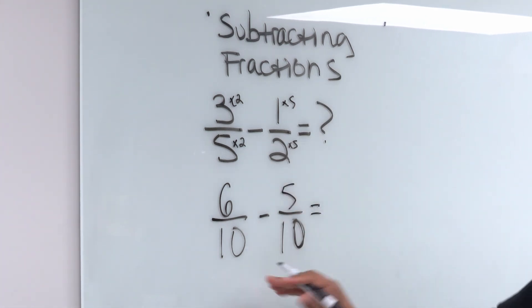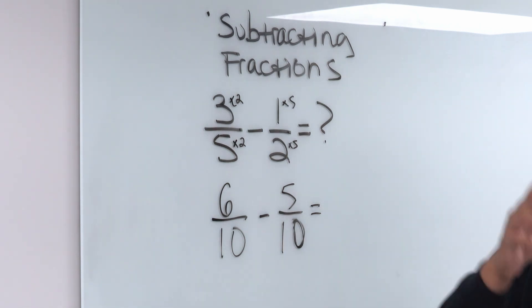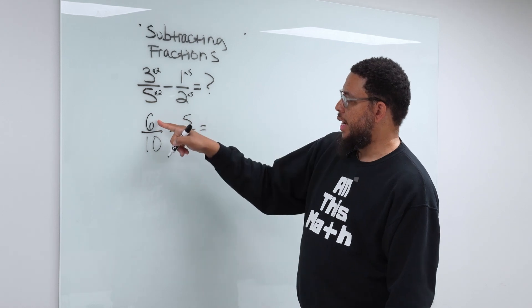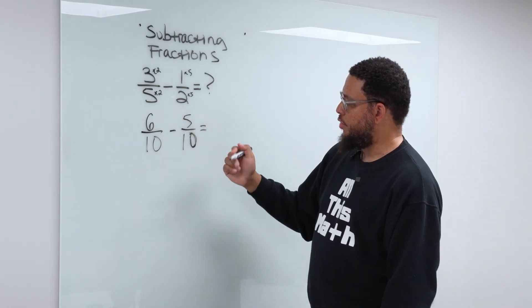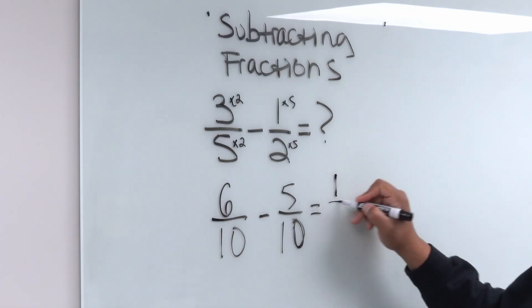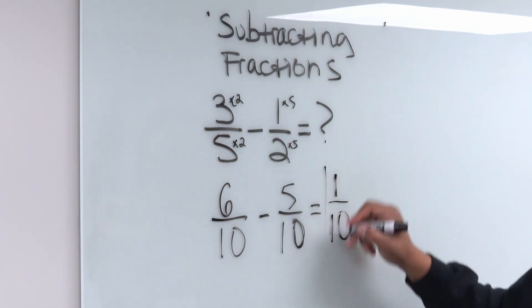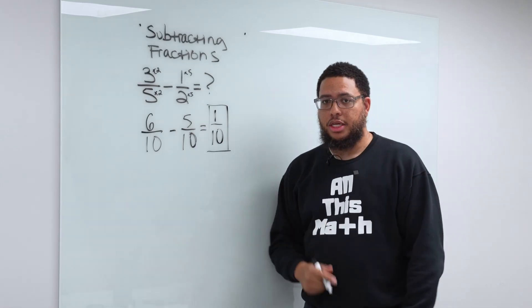And then now I got common denominators. So I got, again, it's like dollars and dollars or pesos and pesos. I can't subtract pesos from dollars. So now I got tenths and tenths. So I got six of them and I'm taking away five of them. So I'm left with one of them. So that is 1/10 and that's today's lesson.